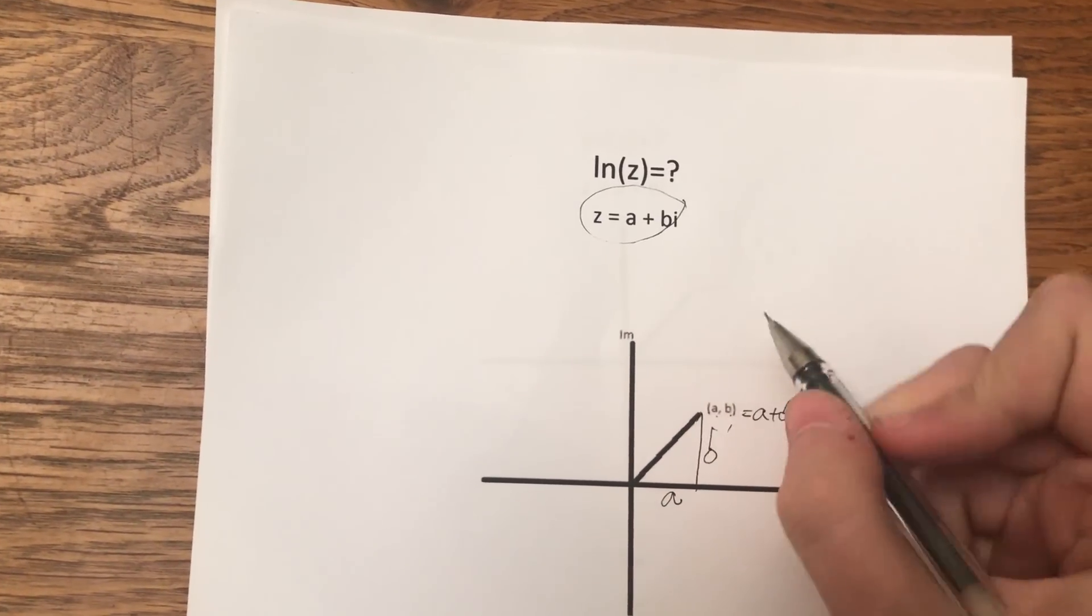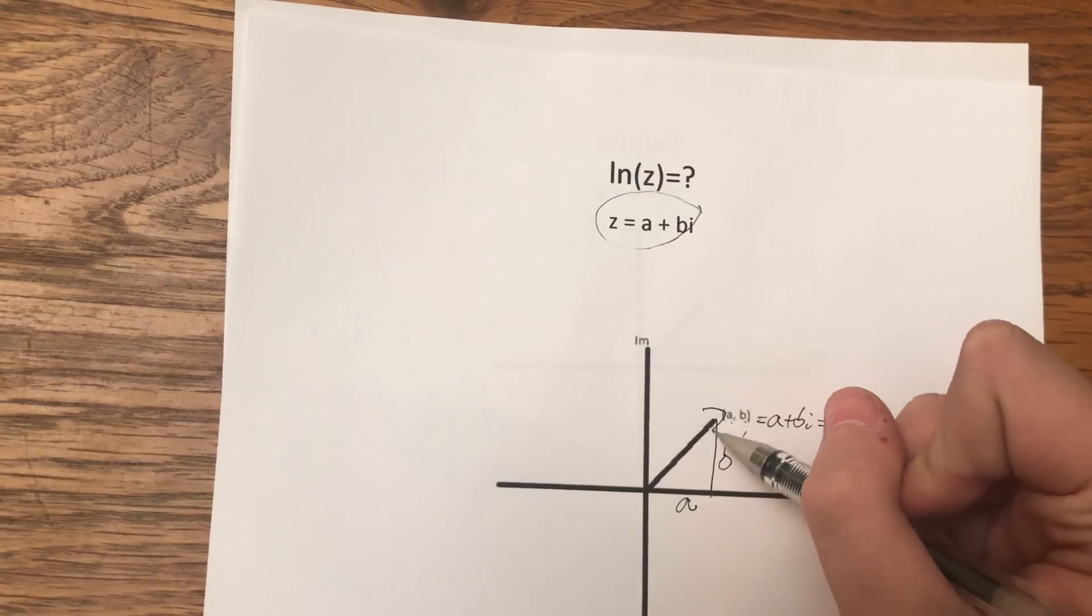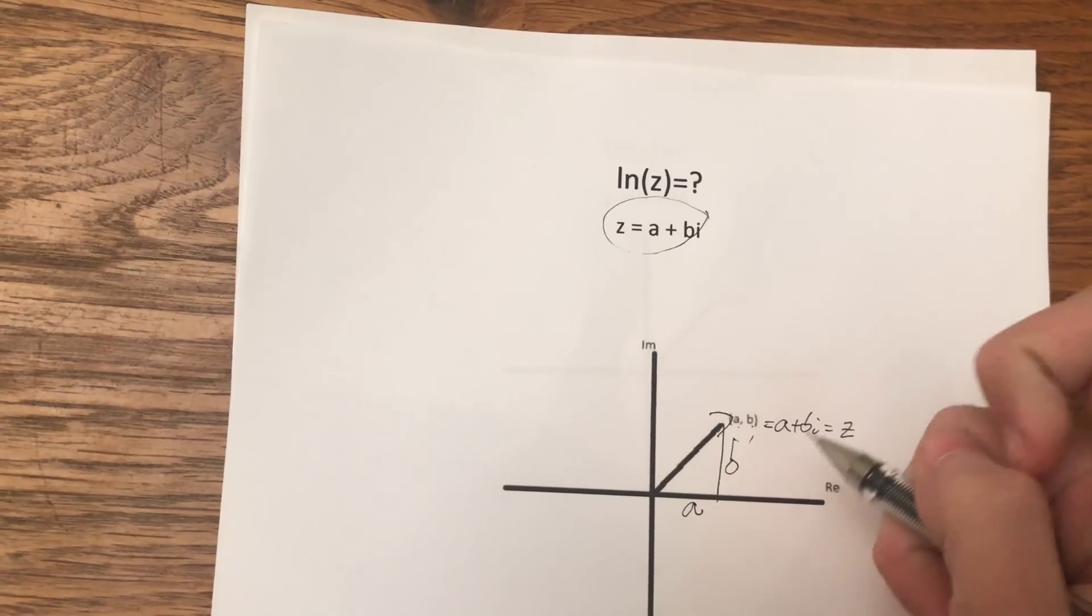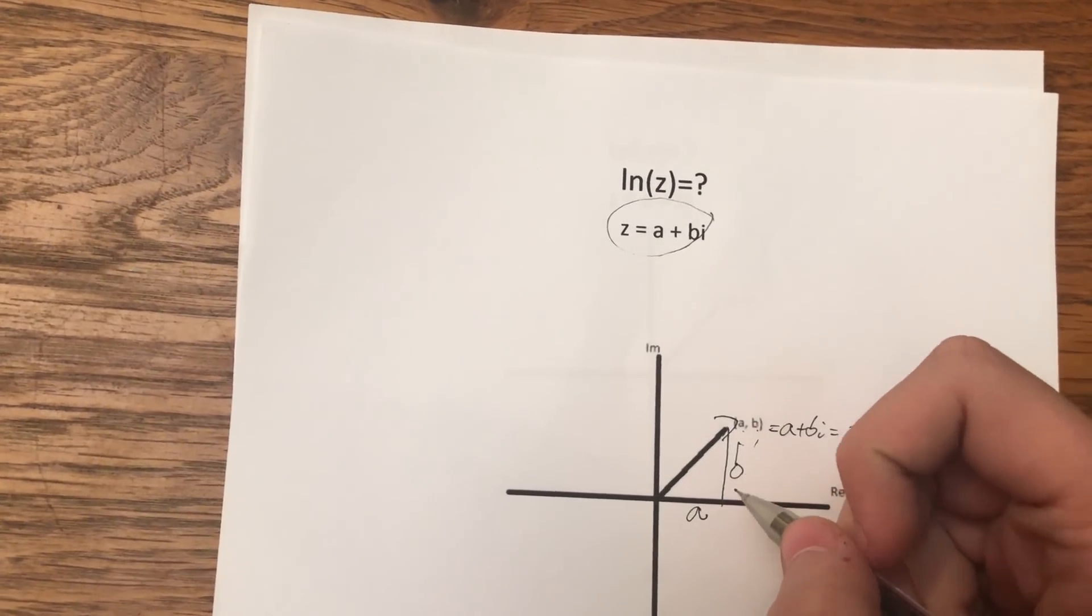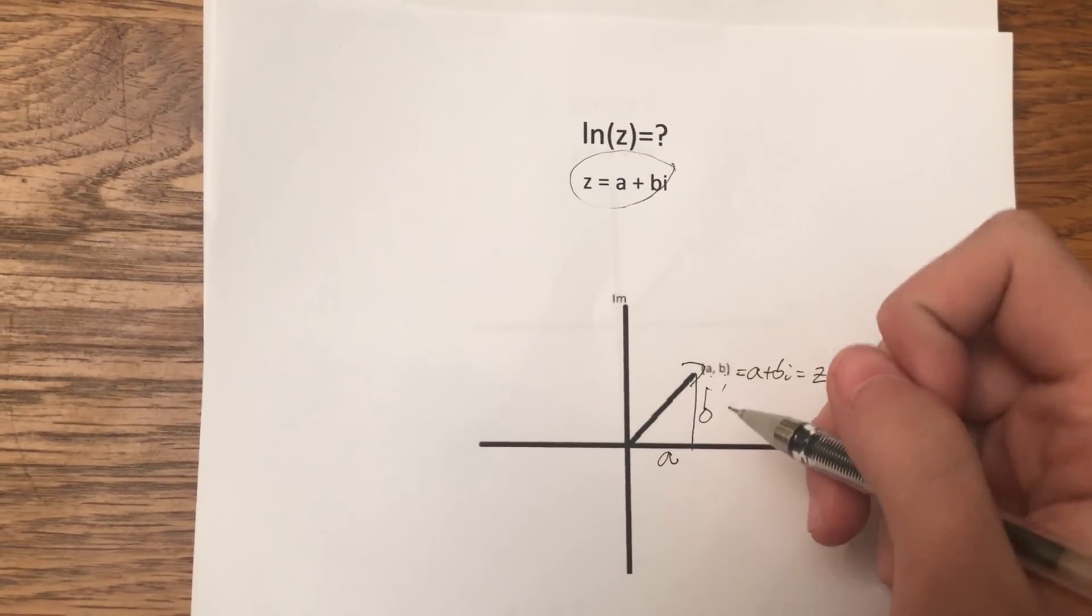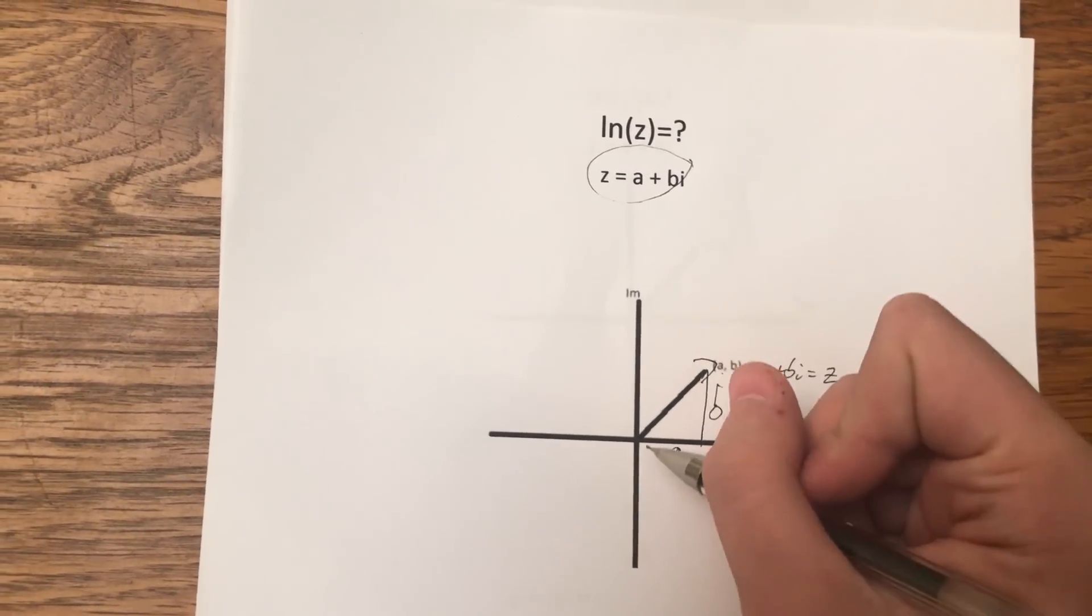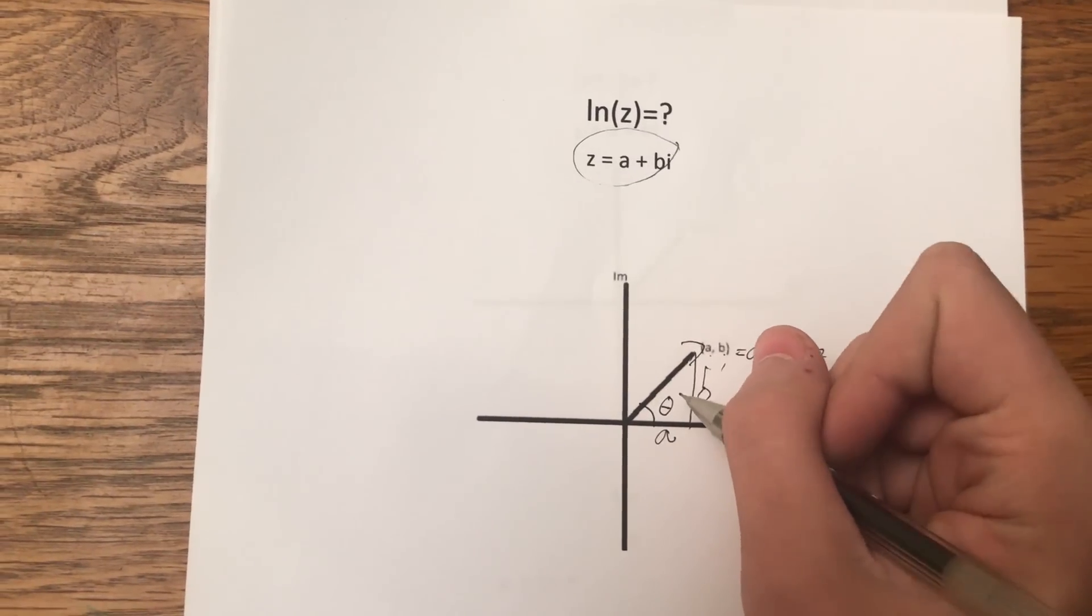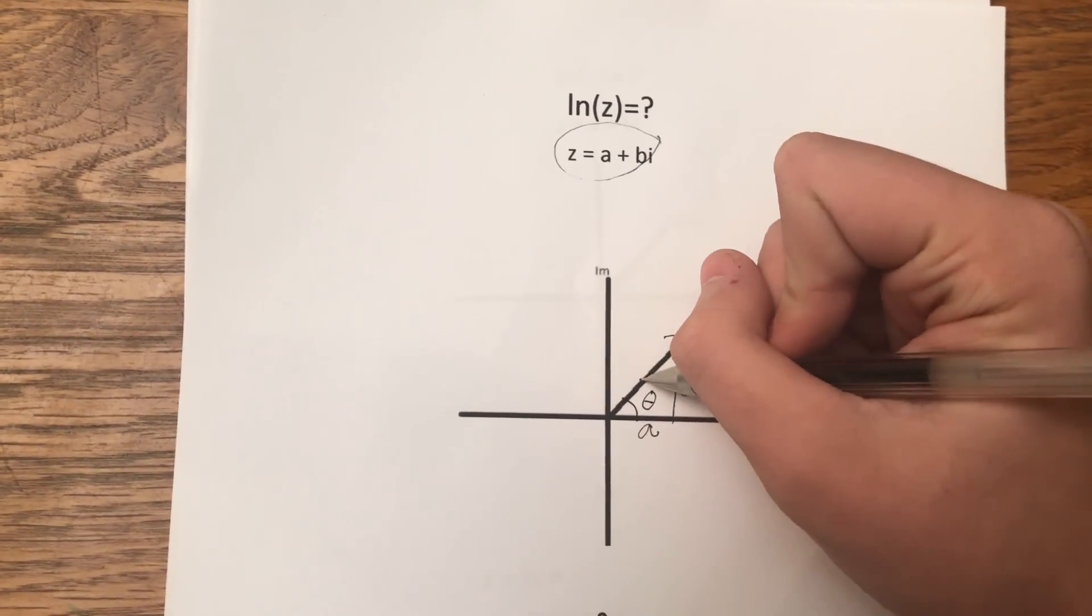But you could also look at this as a vector. A vector has more than one way to define it. You could define it in rectangular form like this, a plus bi, or you could define it in polar form, such as you look at this angle theta and you look at the vector's magnitude which we'll call r.